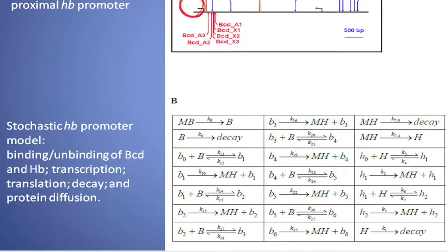What's shown in B is the binding on and off of the bicoid transcriptional regulators, the hunchback regulators, and the transcription from the bound state to producing hunchback RNA and translation of the RNA into the protein. The bicoid proteins and hunchback proteins are diffusing between nuclei and they're also decaying — the RNAs and the proteins have decay rates. That's all captured in our model. We modeled this stochastically so that there's a probability for any of these interactions happening in a given time period.